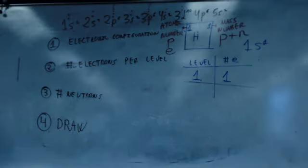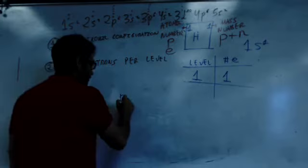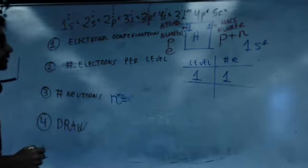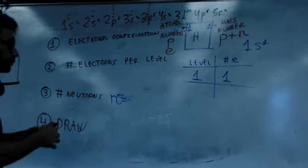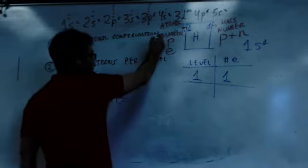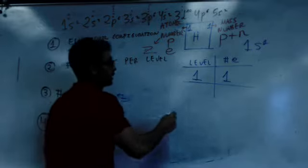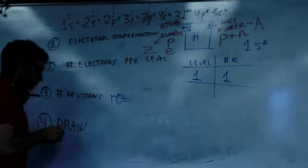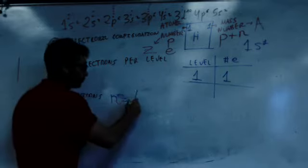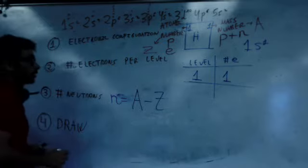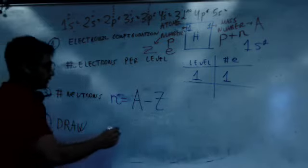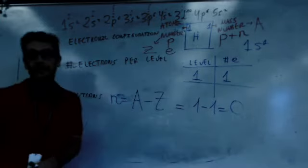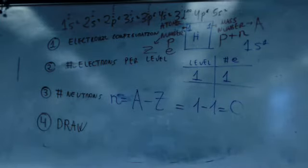Number of neutrons. Number of neutrons is, I put an N. I can make a little equation. N is atomic number, C, mass number, an A. So, for hydrogen, it would be one minus one, zero. It means it has no neutrons on the nucleus.